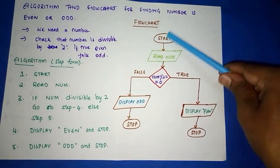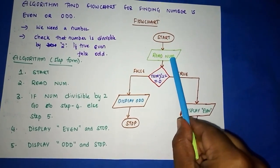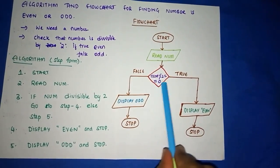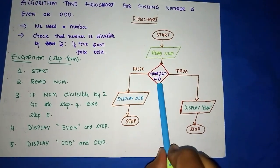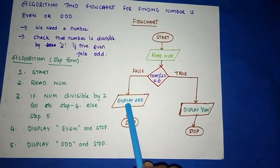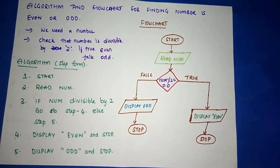This is how you write it. For example, you take the number as 5. You read the number as 5. 5 modulo 2 equals 0? The remainder is 1, not 0. Two twos make 4, so the remainder will be 1, which is false. You come this way and display ODD. You already know that 5 is an odd number. Thank you.